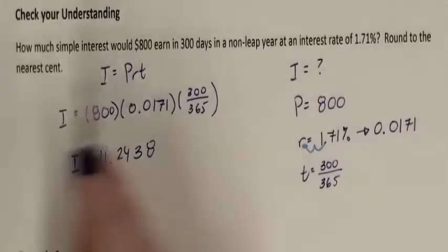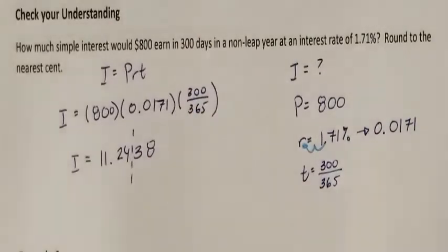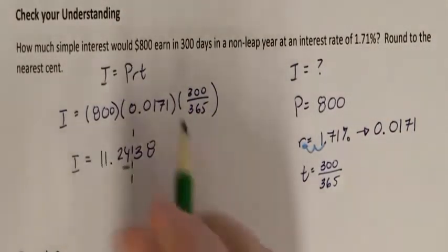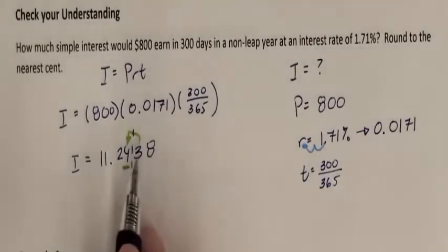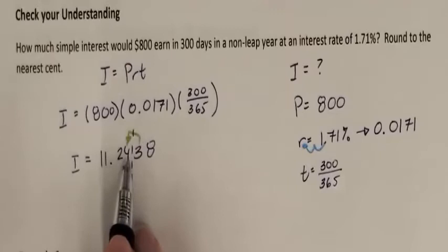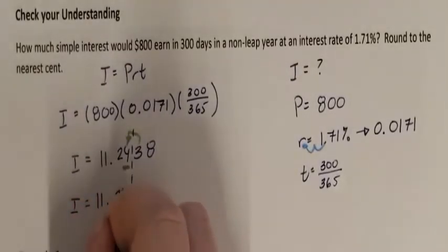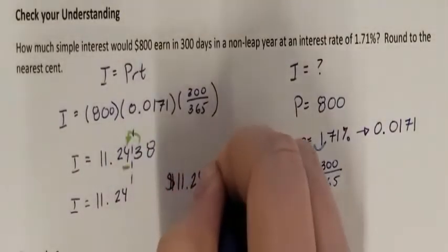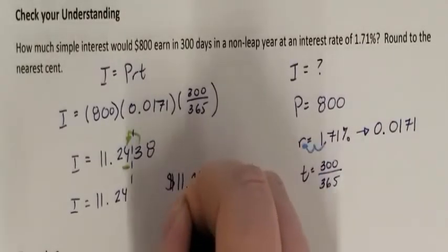It says to round to the nearest cent, which has two decimal places. The digit after the second decimal place is 3, which is smaller than 5, so it stays exactly where it is. My interest earned is $11.24. So $11.24 worth of interest was earned after 300 days.